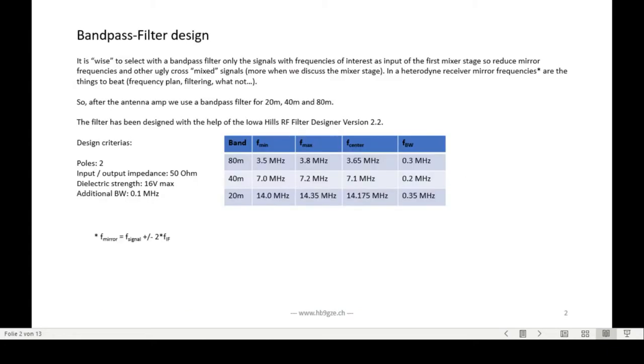The bandpass filter is filtering the input signals. We only want to let the amateur band pass through, and we want to eliminate and suppress all other frequencies if possible, as good as possible.